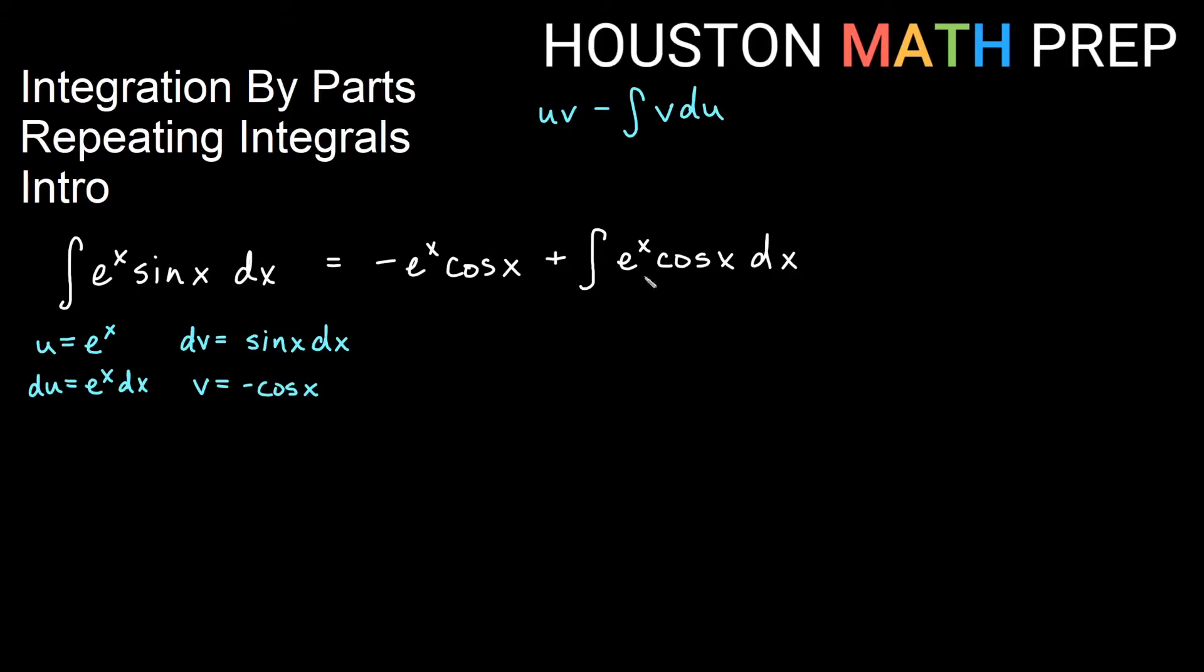Now at this point, you would look at this and notice, now I need to do integration by parts again. So I have a product here. I will choose my u to be e to the x again. Let's say this time my dv is now cosine x dx. And if that's true, then du, the derivative of this would just be e to the x dx again, and the antiderivative of cosine x dx will give me a sine x for v.